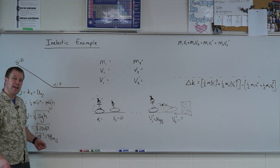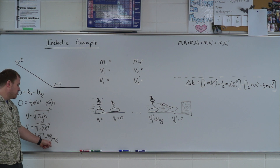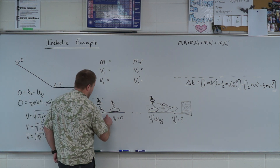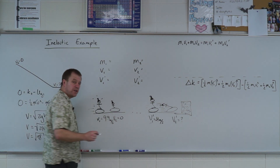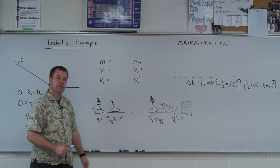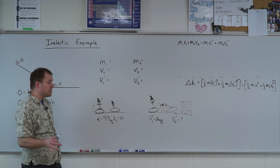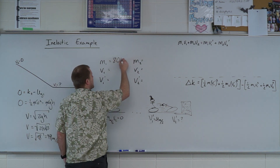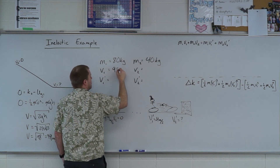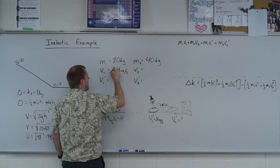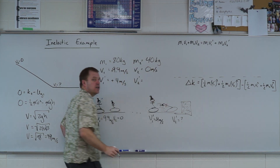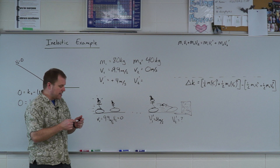I'll use the exact value of square root of 98 in calculations but write 9.9. So you come in at 9.9 meters per second — a full sprinting speed. You're at 80 kilograms, the kid is at 40 kilograms, coming in at 9.9 m/s in the positive direction and leaving at 4 m/s; the kid starts at rest. We now have only one unknown.